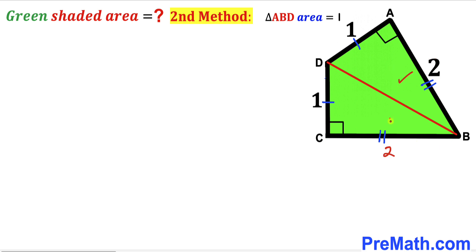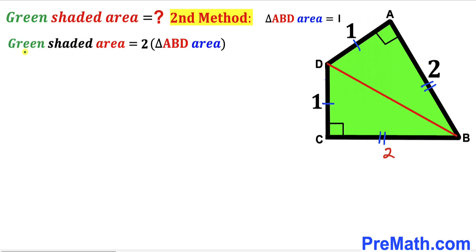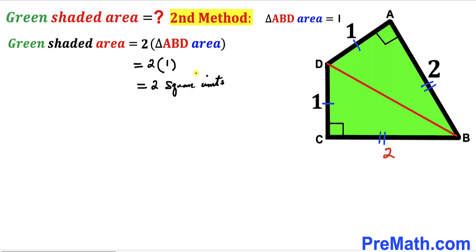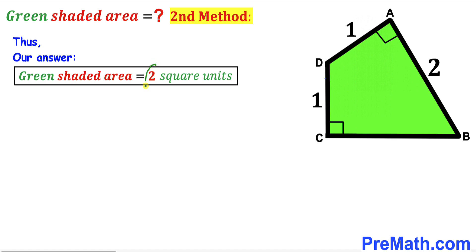Since both triangles are congruent, their areas are equal. The green shaded quadrilateral area equals 2 times the area of triangle ABD. We already calculated the area of triangle ABD as 1, so the green shaded region area = 2 × 1 = 2 square units. Thus the area of this green shaded quadrilateral is 2 square units by the second method as well — that's our final answer.